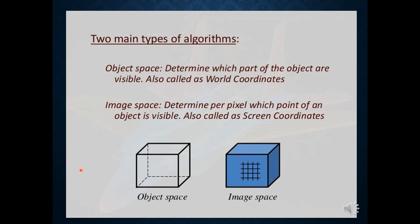To summarize, the object space method is more toward determining which parts of the object are visible and is implemented in the world coordinate system. In image space, it will identify or detect which point of each pixel is visible — it is oriented toward the screen coordinate system.